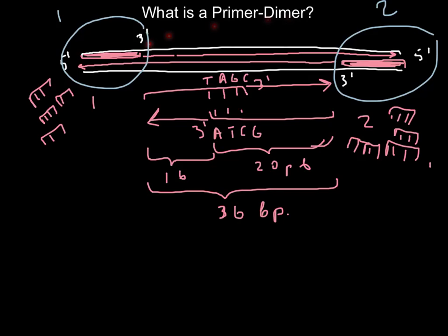So basically, instead of amplifying our DNA of interest, these two primers would anneal to each other and form such structure. Just in after one or two cycles, they would use all our bases in our solution.